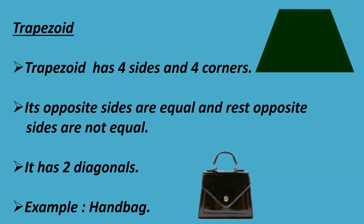Trapezoid. Trapezoid has four sides and four corners. Its one pair of opposite sides are equal, and the other pair of opposite sides are not equal. It has two diagonals. Example: handbag.